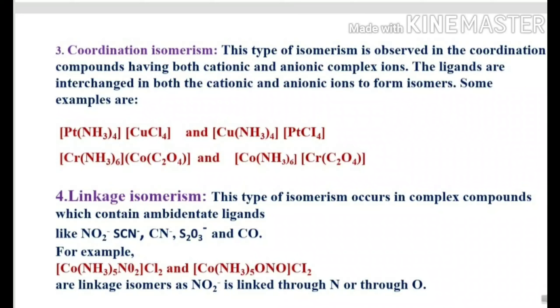The third type is coordination isomerism. This occurs in compounds having both cationic and anionic complex ions, where the ligands are interchanged between both ions to form isomers. For example, [Pt(NH3)4][CuCl4] and [Cu(NH3)4][PtCl4] — both have the same molecular formula but the metals are interchanged. Similarly, in another example involving chromium and cobalt, the same ligands are present but the metals are interchanged between the two isomers.